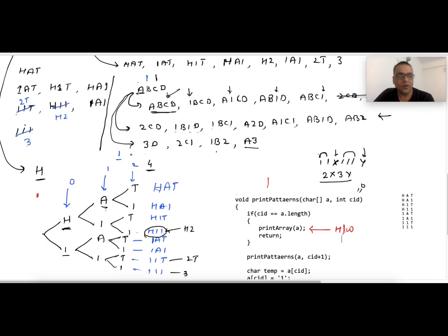Or if you are doing rotten oranges problem, then we are bringing the concept of graph traversal and applying it in a two-dimensional array.